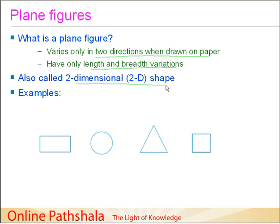The obvious examples here are given, and the first one is a rectangle. Let us just try to see how it fits into the definition of plane figures. We say that plane figures vary in two directions. If we take along the width, then we have a variation along this.